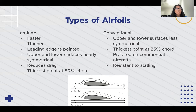Two other types of airfoils are laminar and conventional. Laminar airfoils are faster, thinner, the leading edge is pointed, and the upper and lower surfaces are symmetrical. This reduces drag and the thickest point is at the 50% chord.